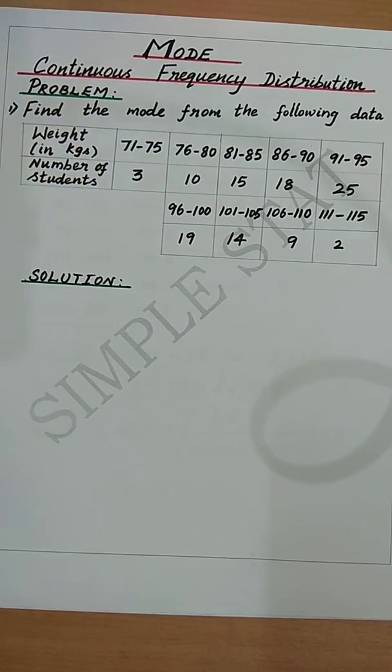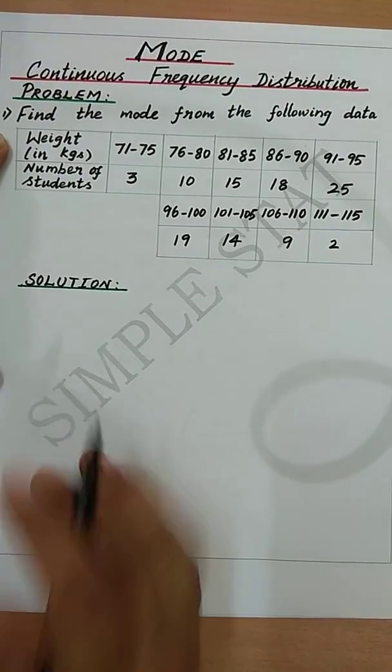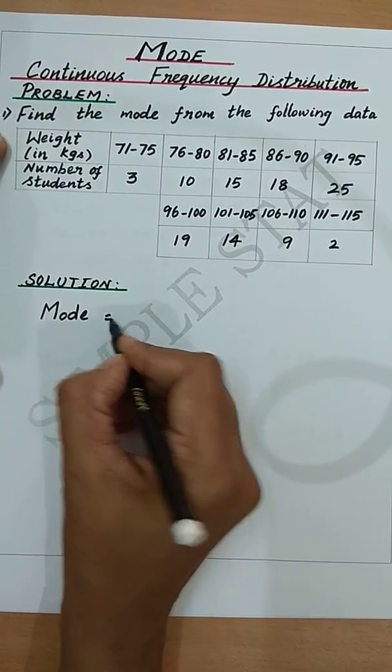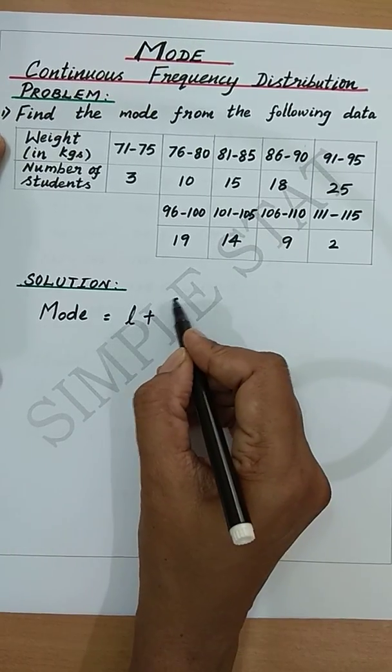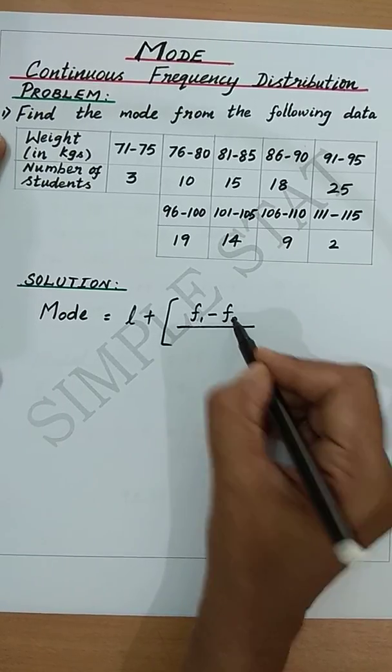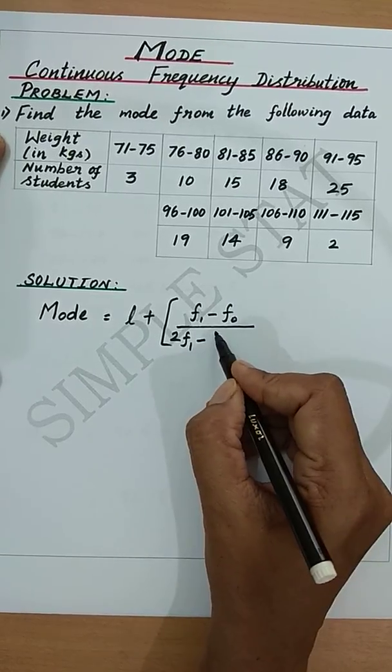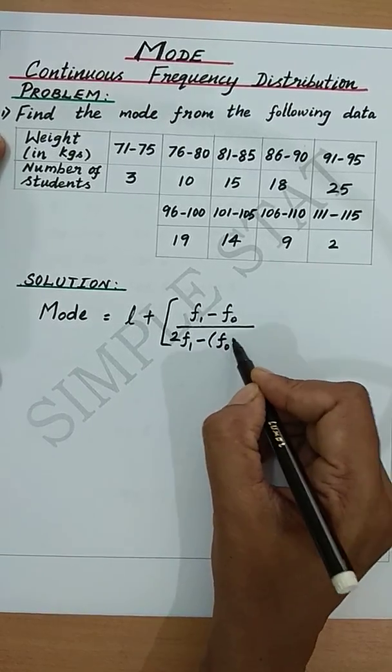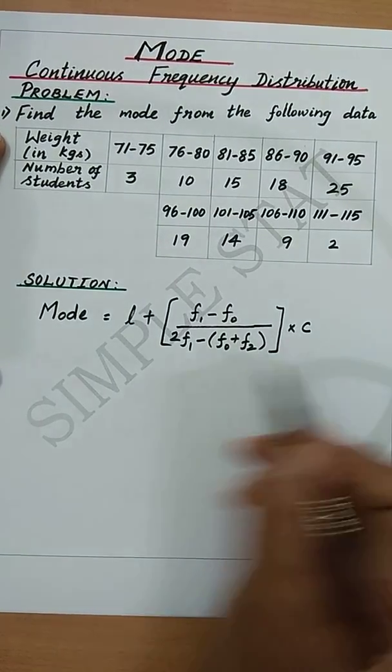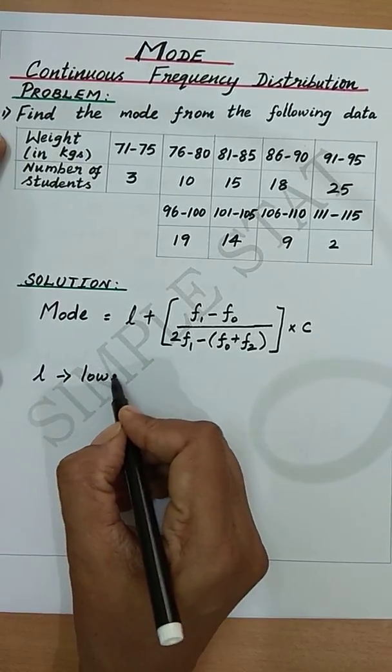Let's now proceed with the solution. The formula for finding mode for continuous frequency distribution is given by mode equal to L plus F1 minus F0 divided by 2F1 minus F0 plus F2 into C, where L denotes lower limit of the modal class.